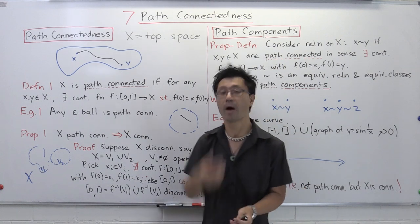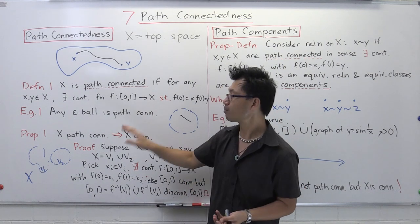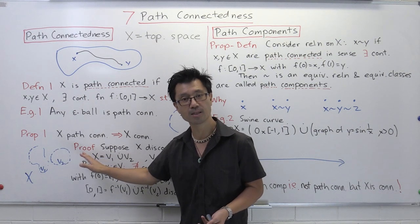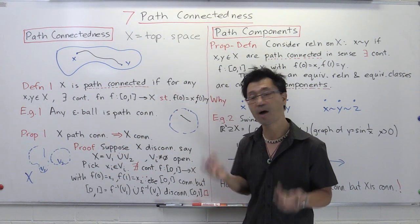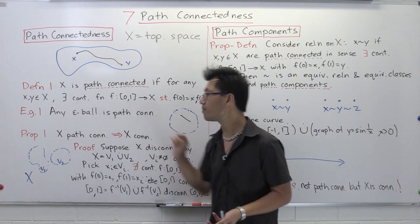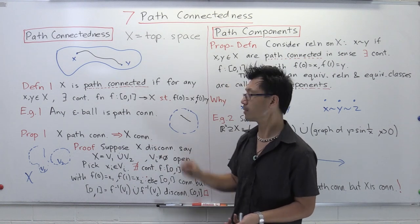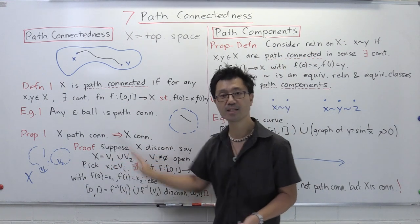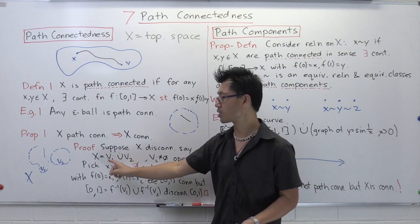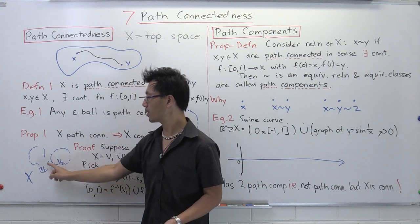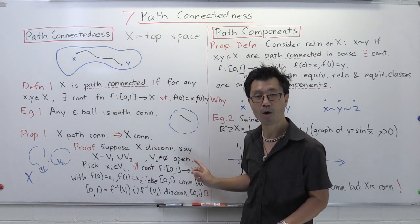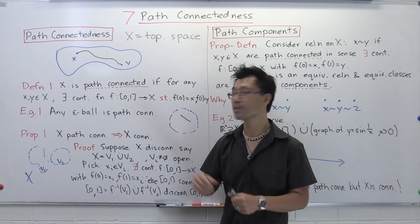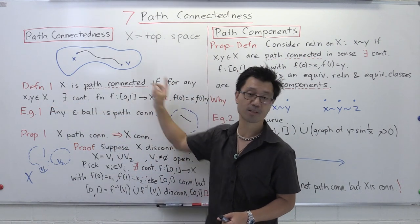The natural question now is: how do path connectedness and connectedness relate to each other? Proposition 1 tells us one implication. If you have a topological space X which is path connected, then immediately it will be connected as well. The proof is quite simple. We'll prove the contrapositive: we'll show that if X is disconnected, then X is not path connected. If X is disconnected, that means we can express it as a disjoint union of non-empty open sets, say V1 disjoint union V2. We want to show it's not path connected, so I need to find two points in X such that I can't construct a path from one to the other.